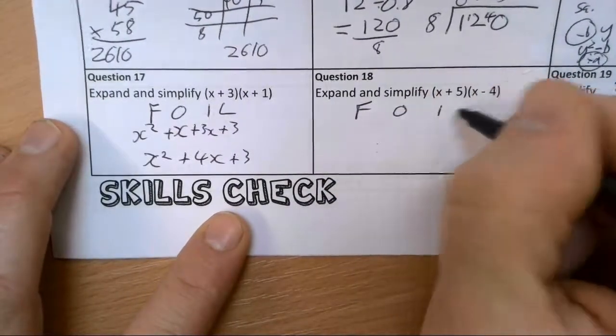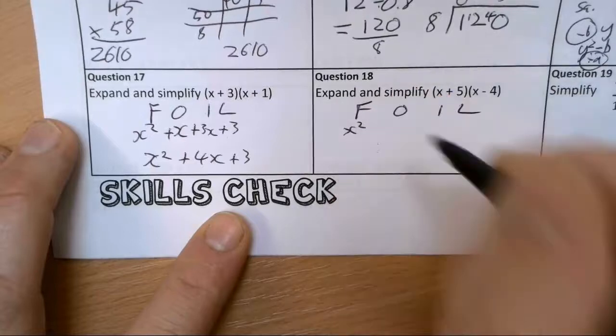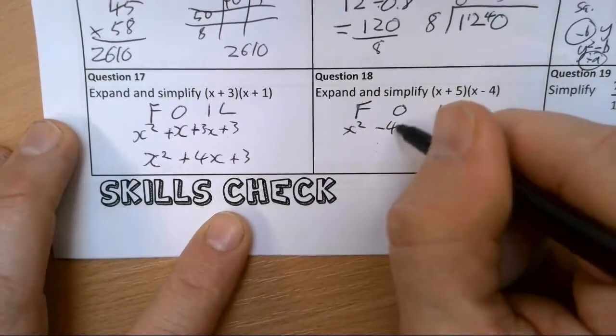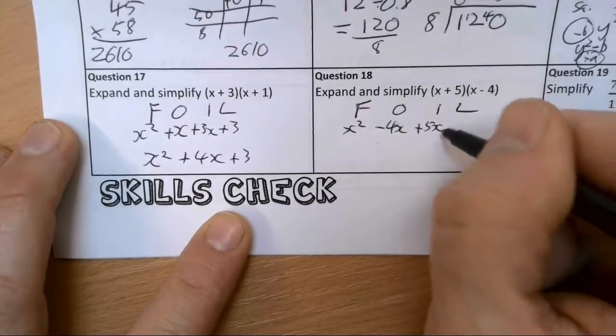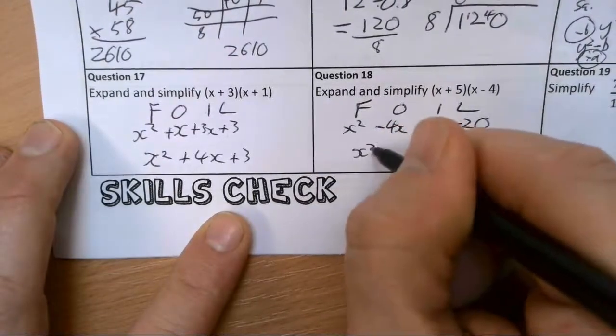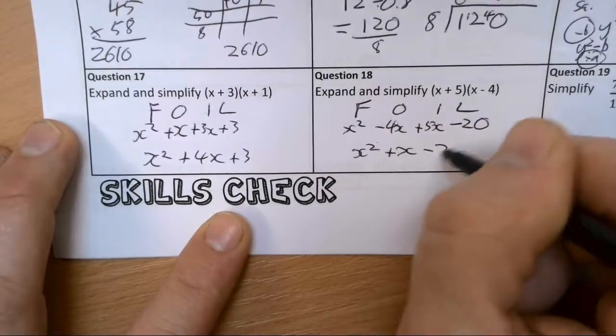A bit more FOIL. First, outer, inner, last. We've got x squared, we've got minus 4x, we've got plus 5x, we've got minus 20. x squared plus x minus 20.